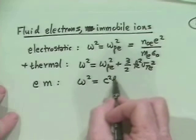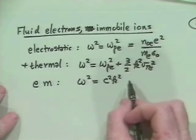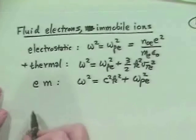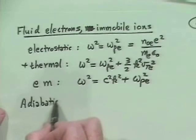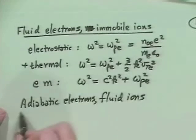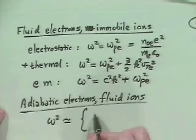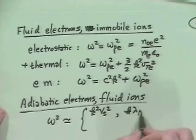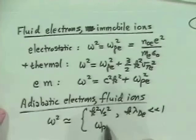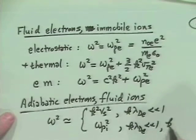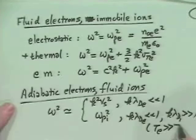On the other hand, if we had adiabatic electrons and fluid ions, then we got omega squared was either k squared v sound squared, if we had k lambda debi electron much less than 1, or omega pi squared, if we had k lambda debi electron much less than 1, but k lambda debi i much greater than 1, which requires te much greater than ti, it turns out.